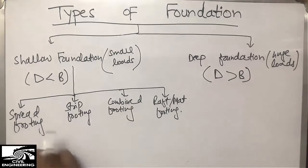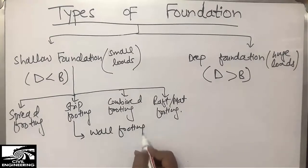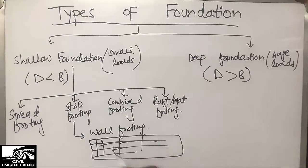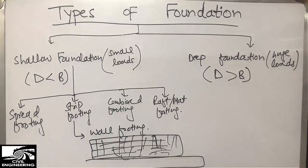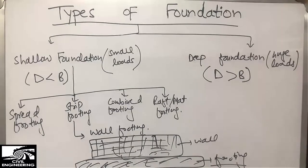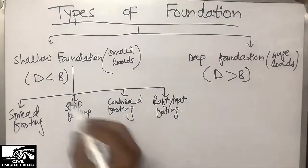The second type is strip footing, also called wall footing. It is provided mainly throughout the length of a wall. The footing placed below the wall is called wall footing. Since it runs like a strip underneath the wall, we call it strip footing. This was the second type of shallow foundation.